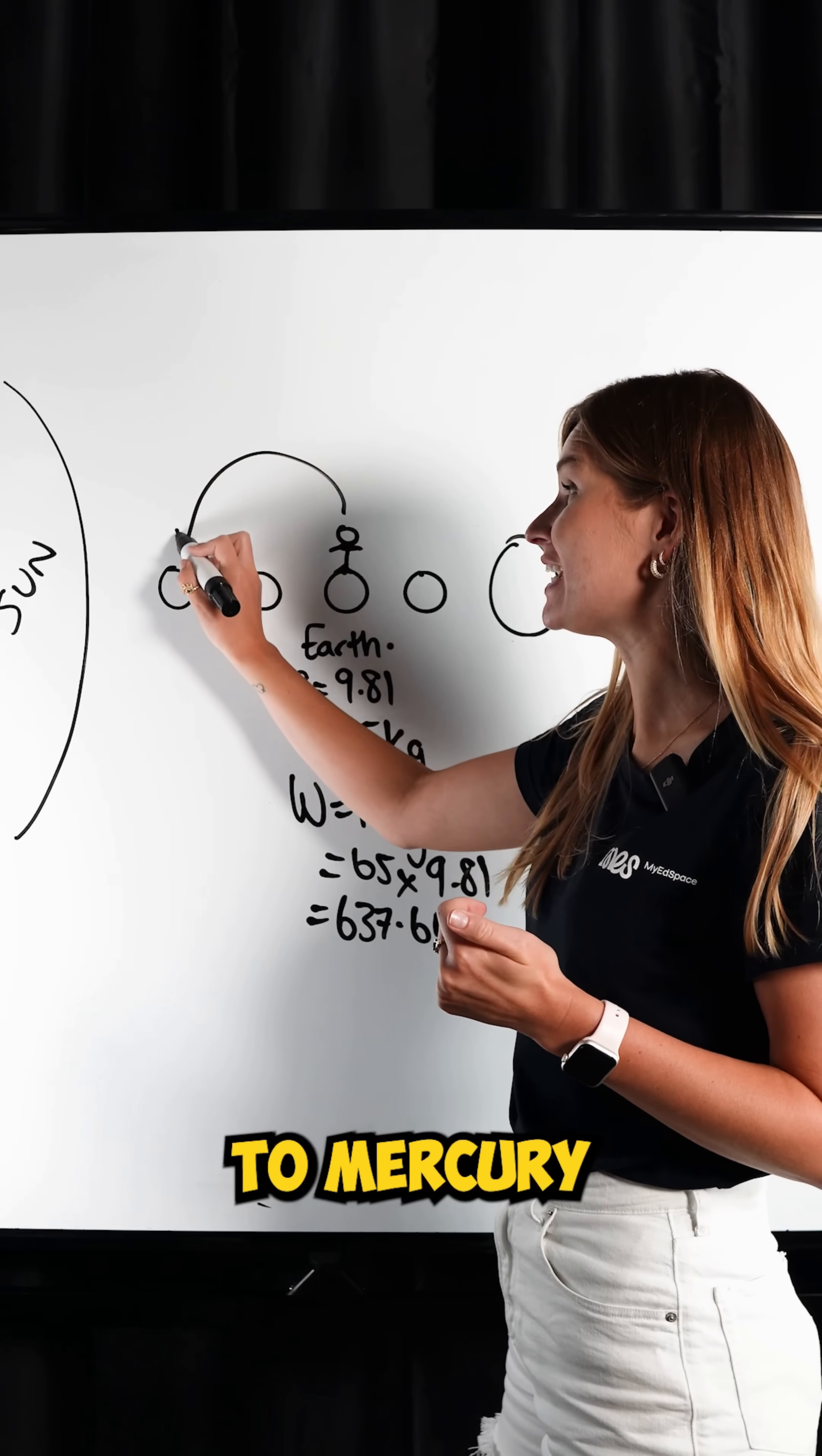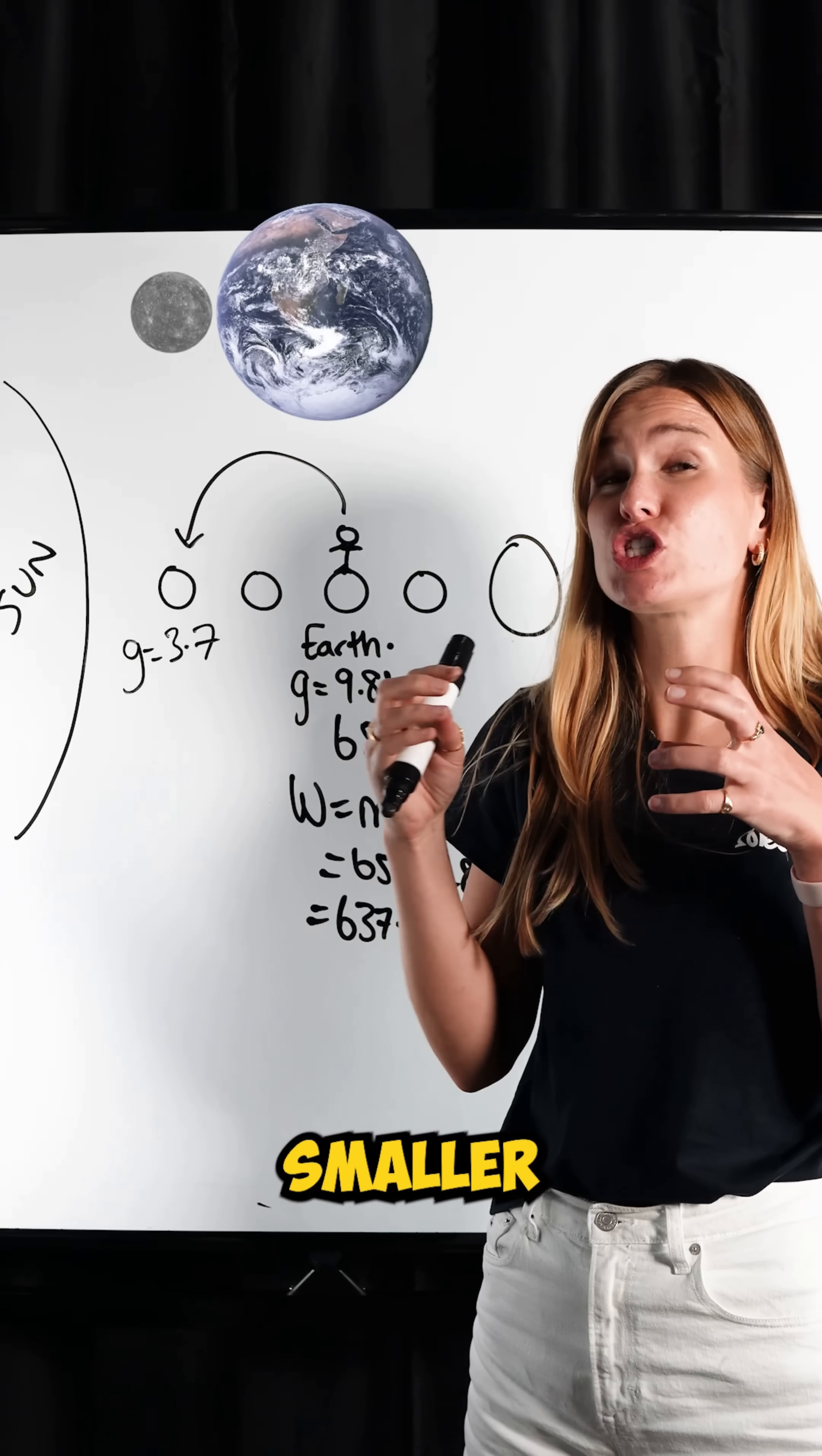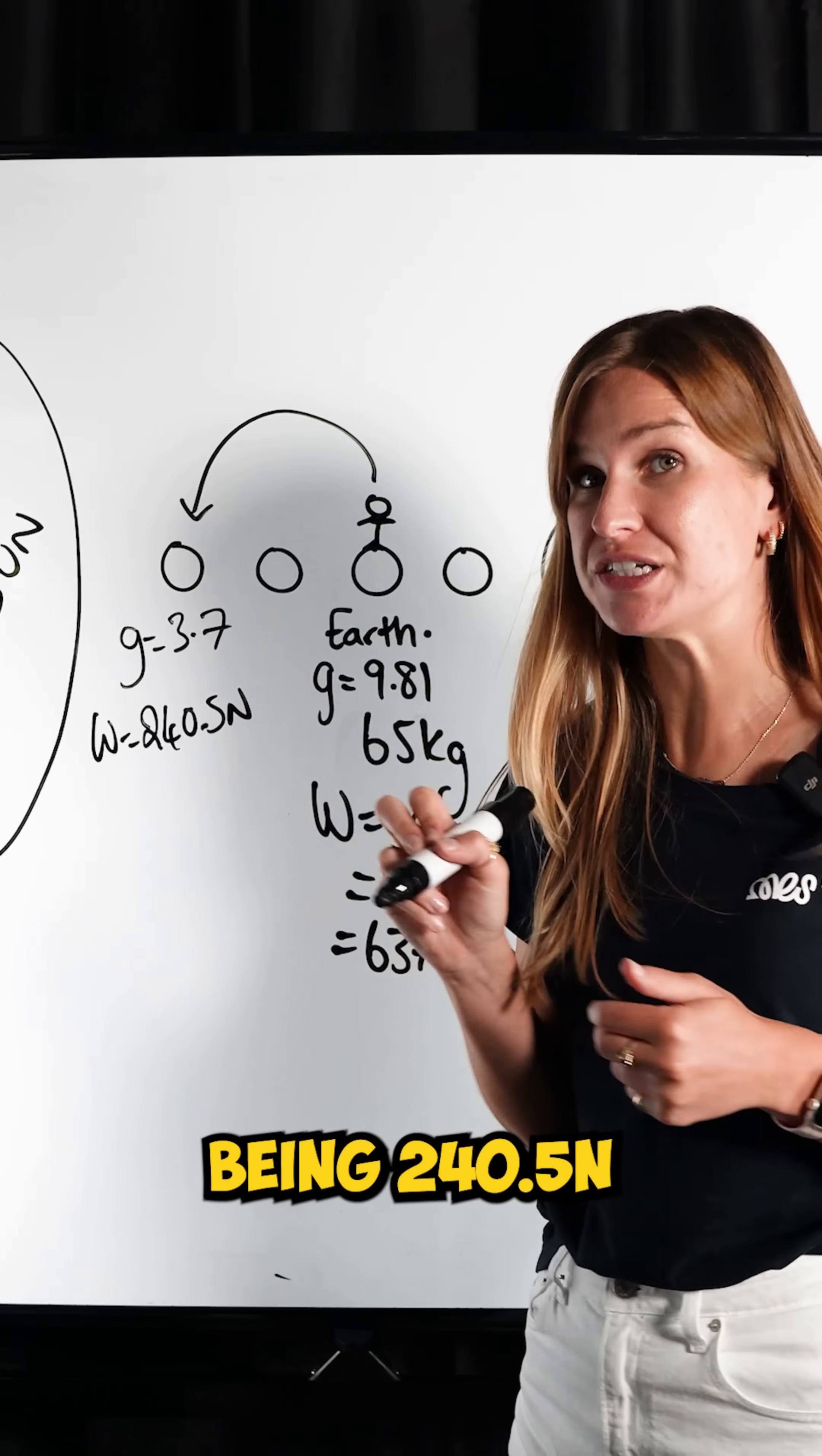If we went to Mercury, where the value of g there is about 3.7 because Mercury is a much smaller planet, it's the one closest to the sun, my weight would end up being 240.5 newtons.